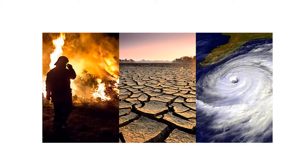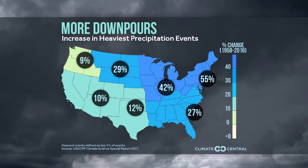Climate change is also altering the water cycle. As the surface of the ocean and other water bodies get warmer, the rate of evaporation increases. We also know that warmer air can hold more water vapor than cooler air. This means that as the climate warms, the chance for larger rainstorms is increasing. Climate scientists have observed a large increase in the heaviest storms. In the Northeast, the amount of rain falling in the heaviest 1% of storms increased by 55% between 1958 and 2016.